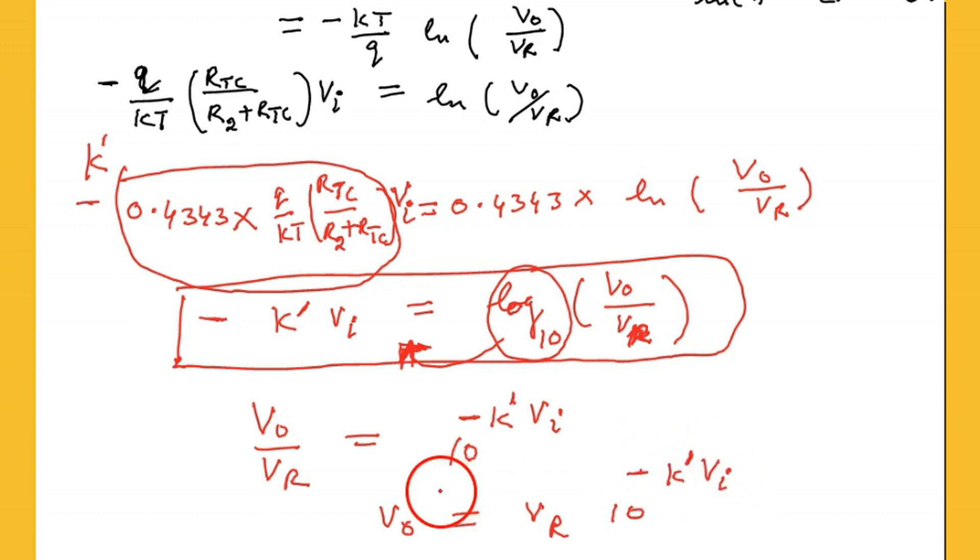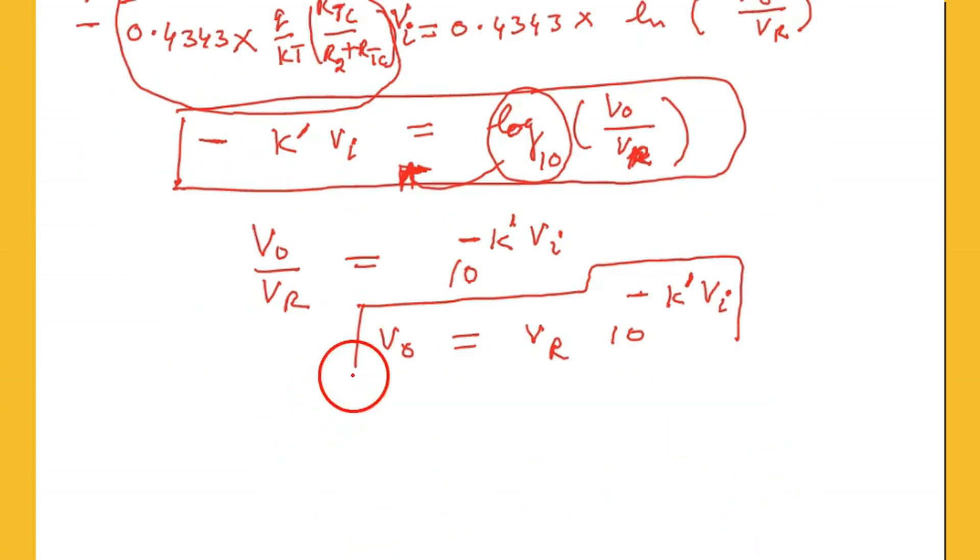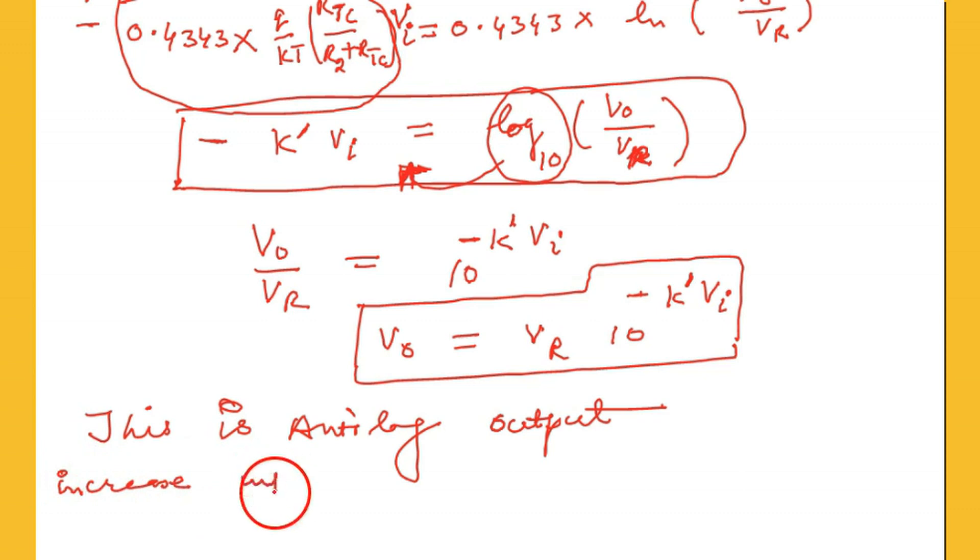So it becomes 10 raised to power minus k prime into vi. So output voltage is now 10 raised to power. So that's anti-logarithmic term. That becomes anti-logarithmic because output is 10 raised to power some constant into vi. So this is our anti-log amplifier.